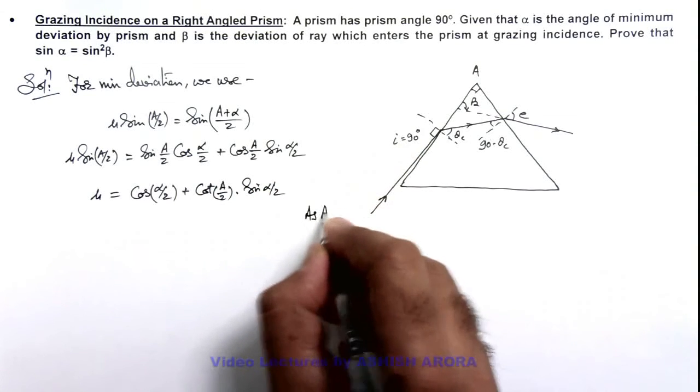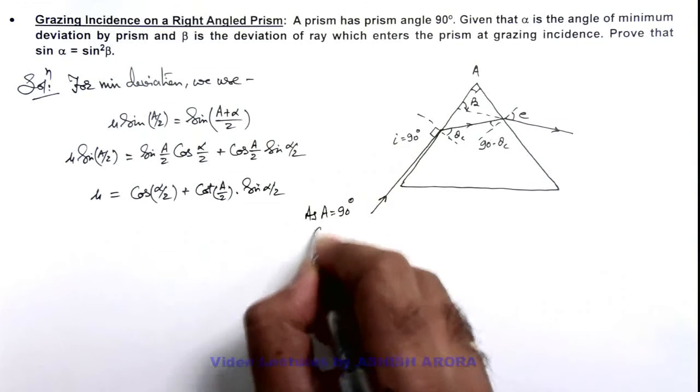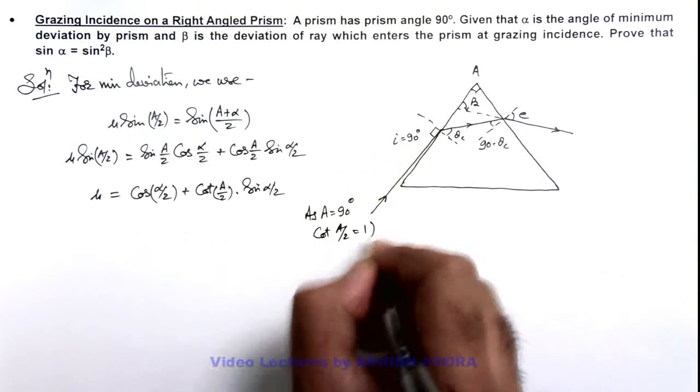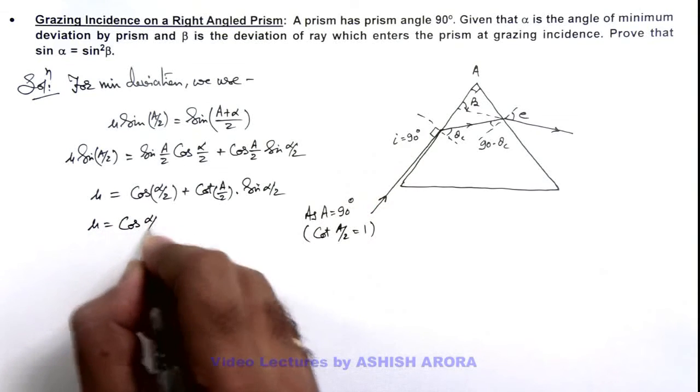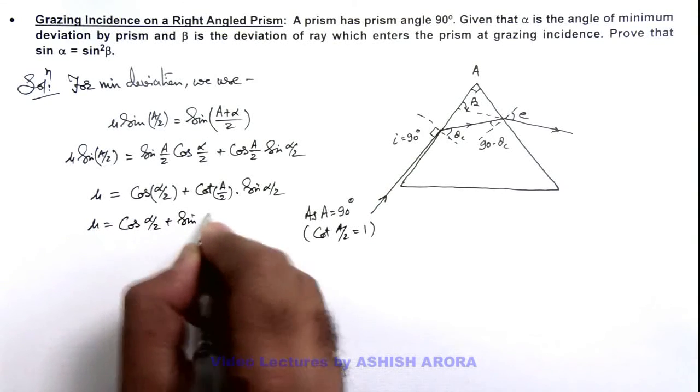And here A is 90 degrees so cot A by 2 we can write as 1 multiplied by sine alpha by 2. So the value of mu we are getting is cos alpha by 2 plus sine alpha by 2.